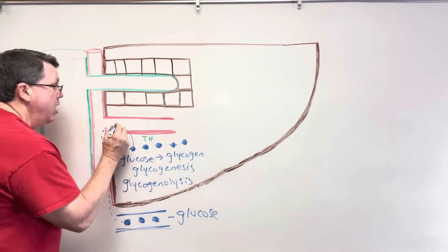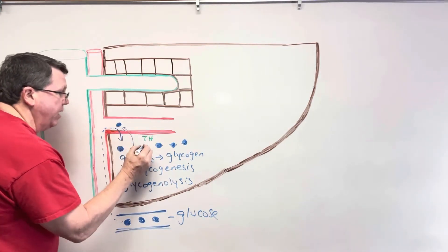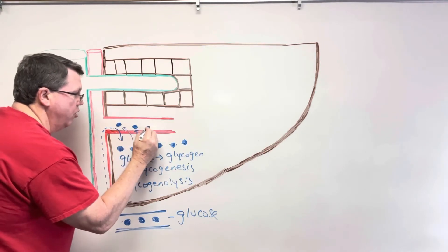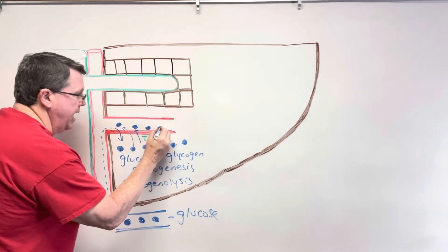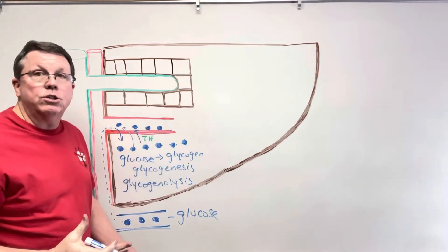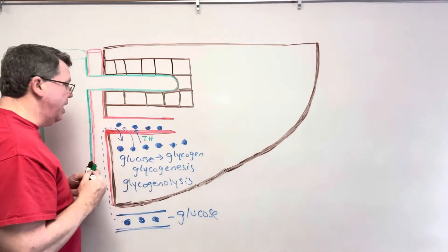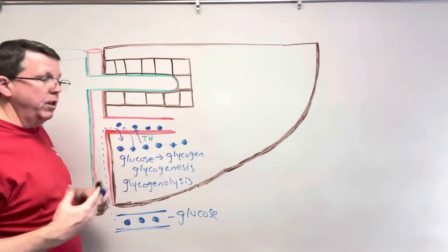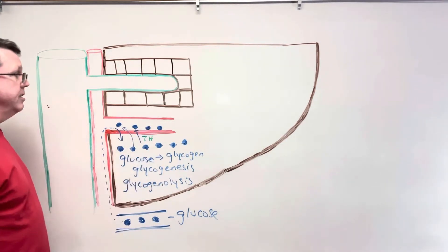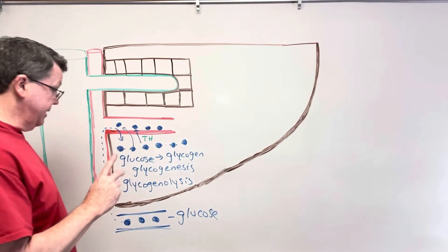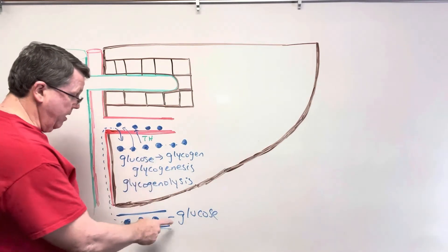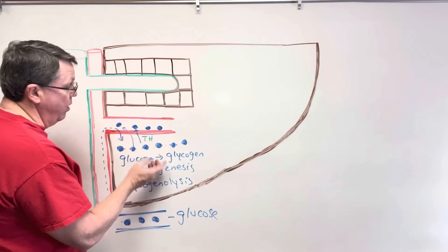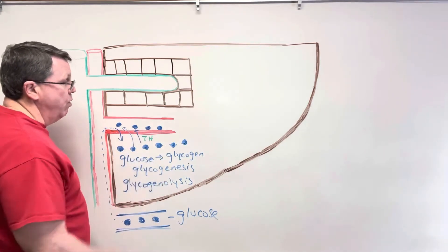You might think that all this extra glucose entering the bloodstream would cause hyperglycemia, but in actuality the pancreas responds and moves glucose into cells, so blood sugar stays at a pretty constant rate. So the first function is helping absorb glucose from the intestines, and the second is releasing glucose between meals.